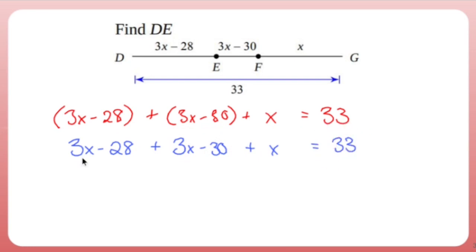Let's combine some like terms. We got 3x, another 3x, and 1x, so that's 7x. We've got negative 28 and negative 30, which is negative 58, and that equals 33.